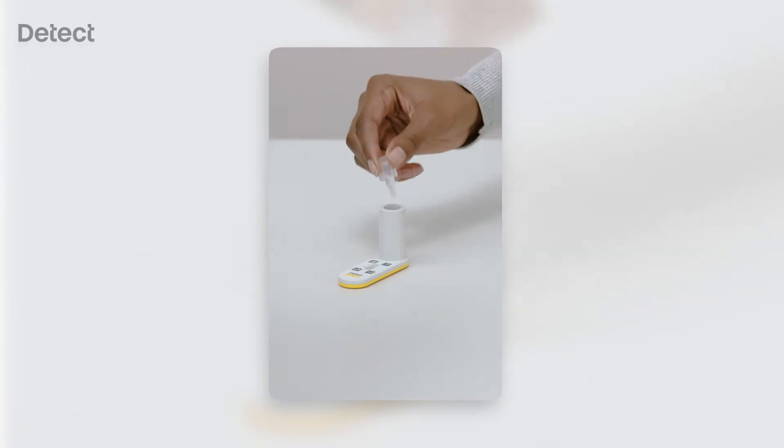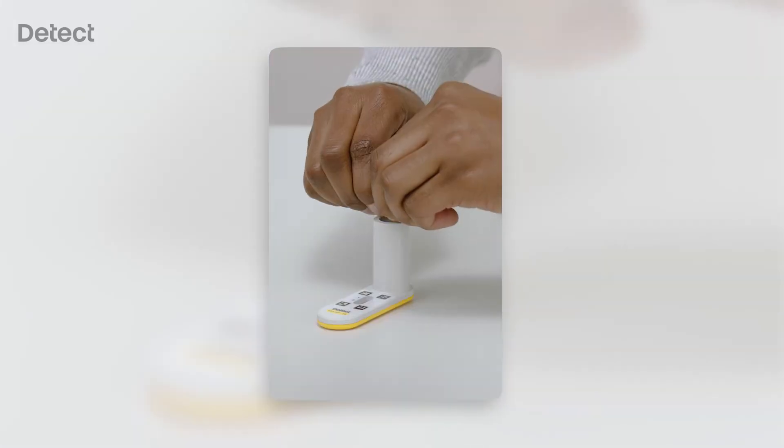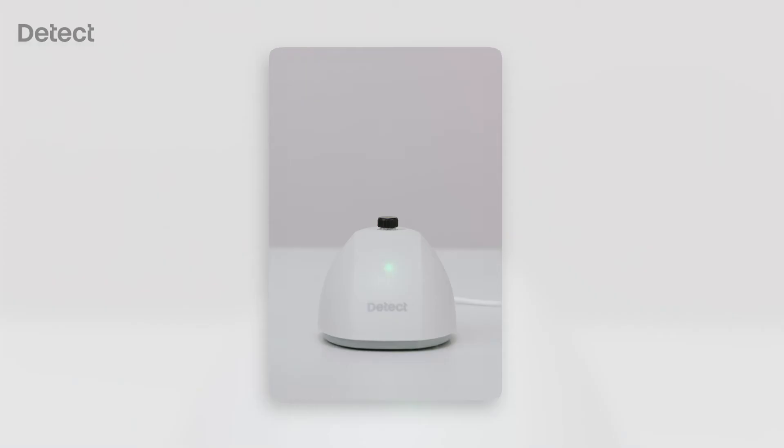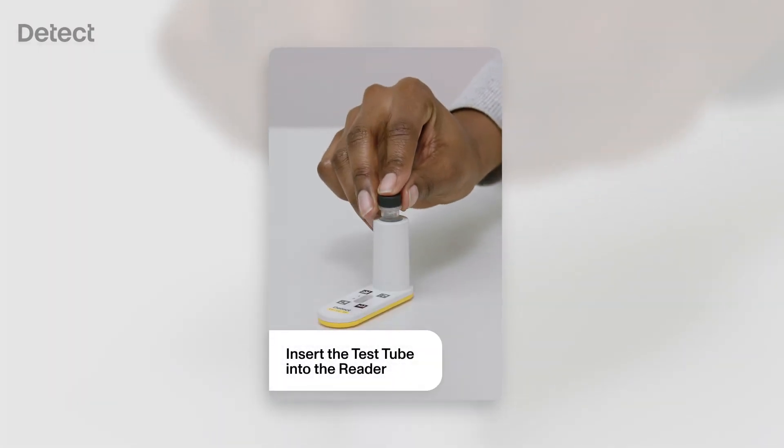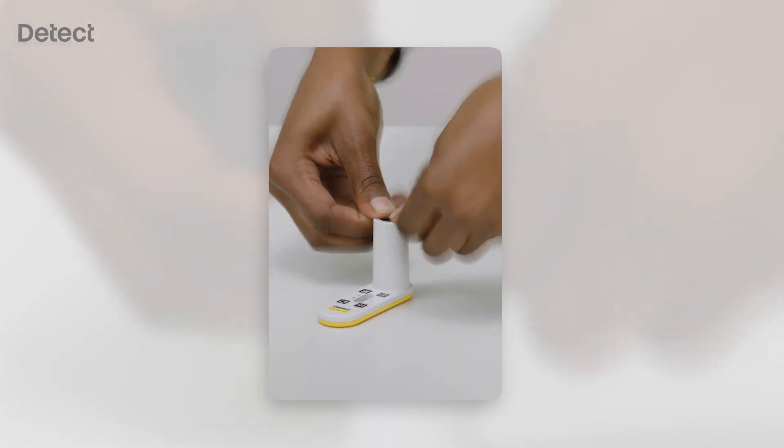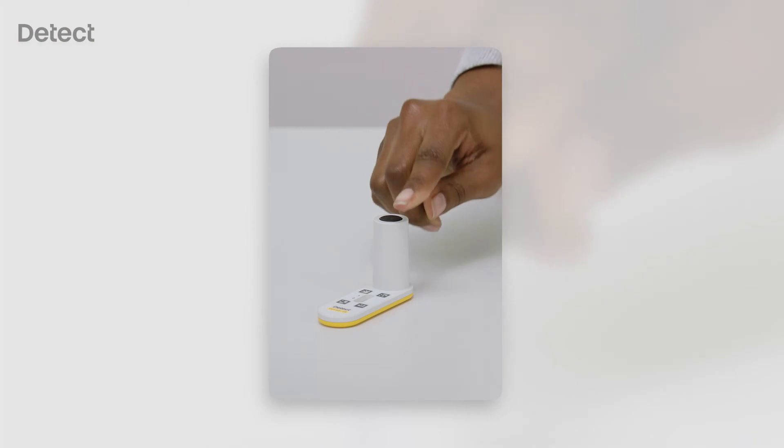Insert the dropper tip first into the reader chimney. Squeeze the dropper to dispense the liquid, then discard the dropper. Remove the test tube from the Detect Hub once the processing step is complete. Place the tube into the reader chimney, pressing down firmly with both thumbs. You may hear a pop as the reader pierces the tube.